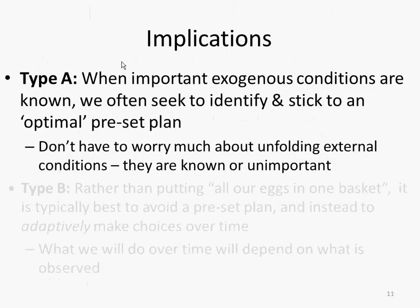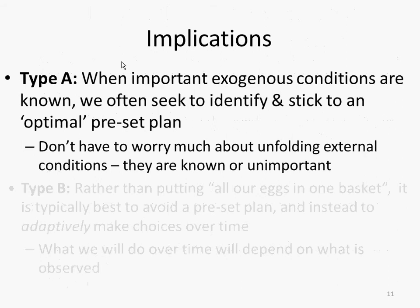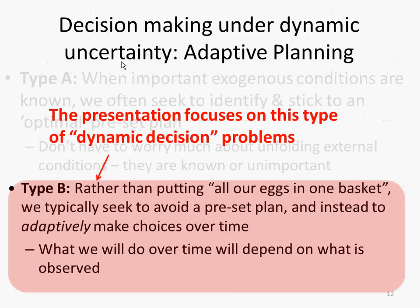With Type A problems, we often seek to identify an optimal preset plan — this is the strategy we use, and we don't have to worry too much about unfolding external conditions because they don't really change our strategy. With Type B situations, rather than putting all our eggs in one basket for a policy, we typically seek to avoid a preset plan and instead have an adaptive plan — what we do depends on what we observe.